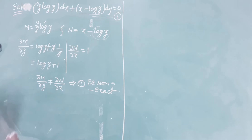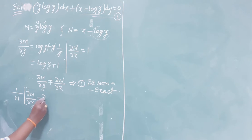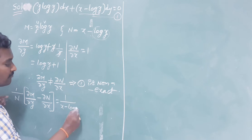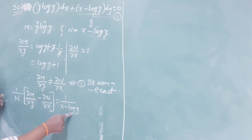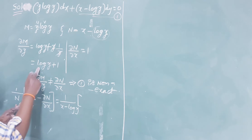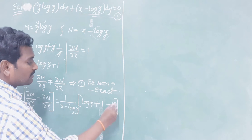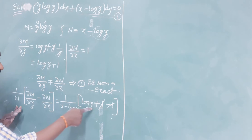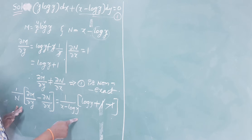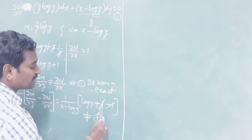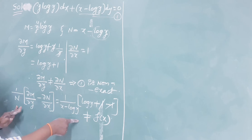Check the value of (1/N)·(∂M/∂y - ∂N/∂x). Here 1/N = 1/(x - log y), and ∂M/∂y - ∂N/∂x = (log y + 1) - 1 = log(y). So the result is log(y)/(x - log y). Since y is not eliminated from this result, it is not a function of x only, so type 3 also fails.